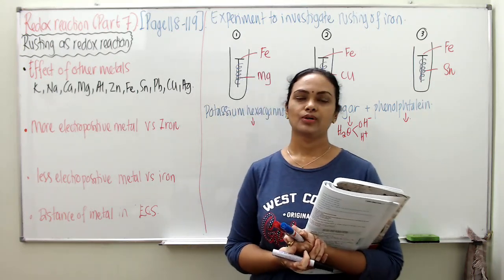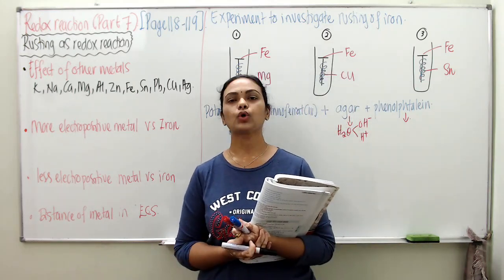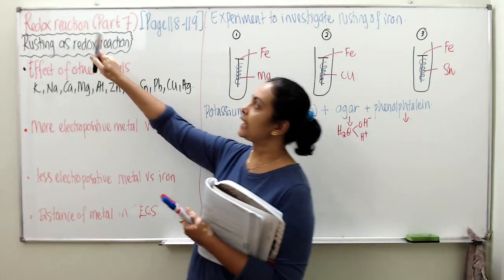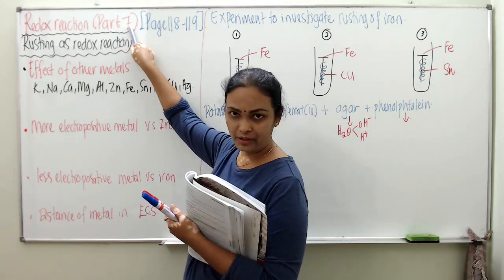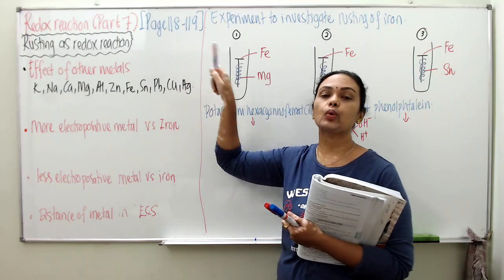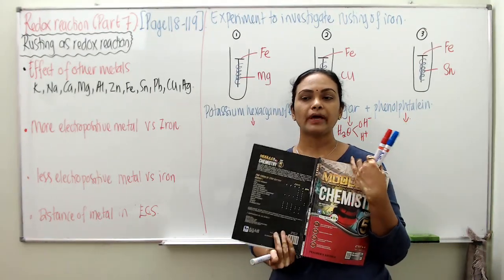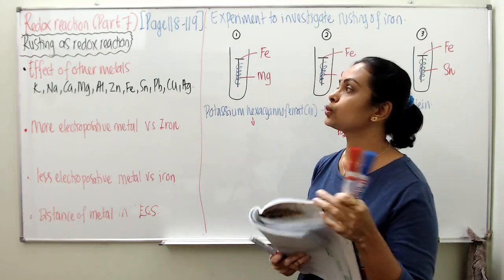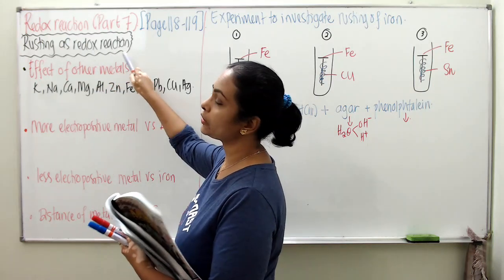Hello, for my Form 5 students, today we are here to continue our lesson in the chapter Redox Reaction Part 7, page 118 to 119 from this module. So we are still in the short topic of rusting as a redox reaction.